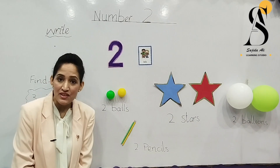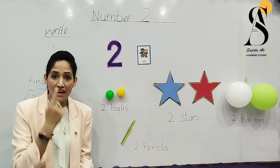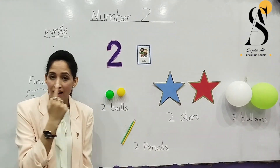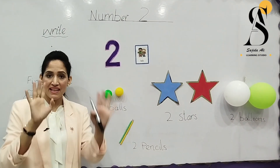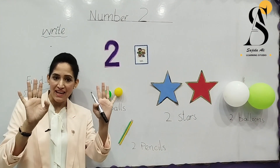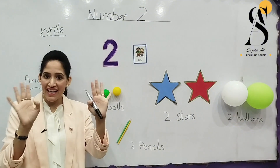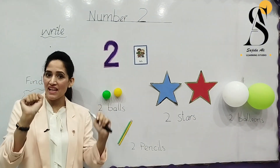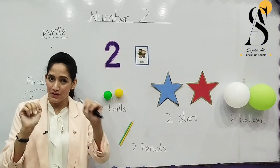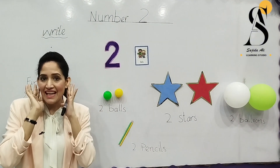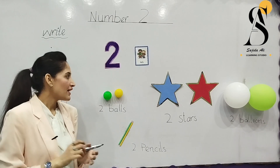Can you tell me how many eyes do you have? We have two eyes — one and two. How many hands do we have? Raise up your hands. Yes, we have two hands — one and two. And we have two ears as well.